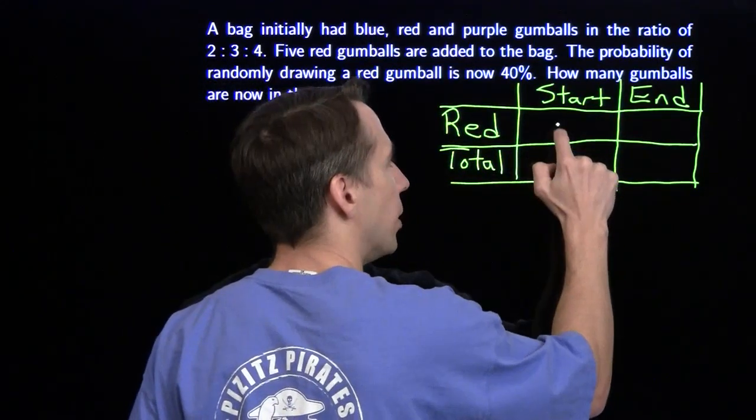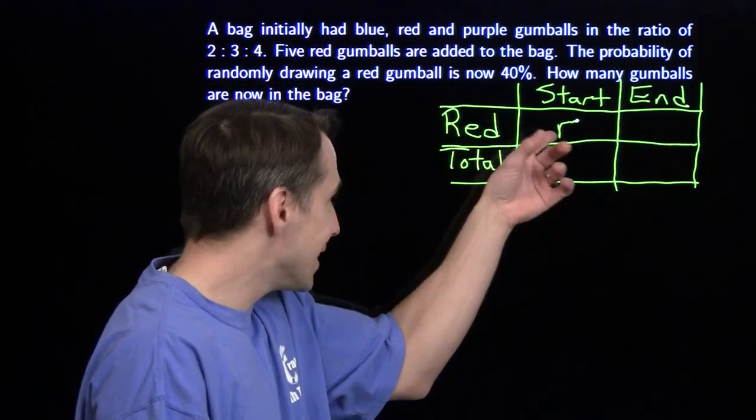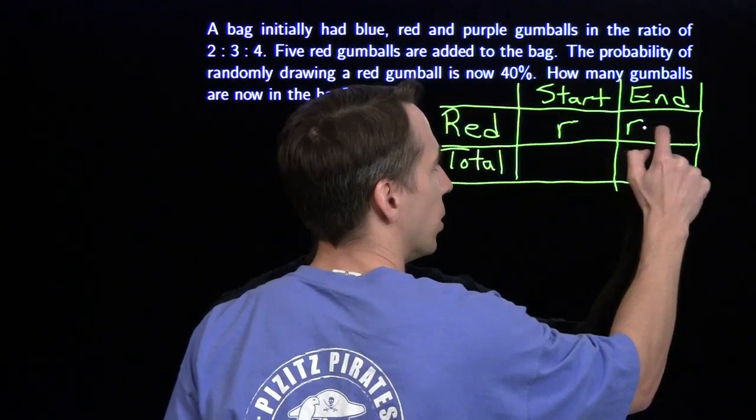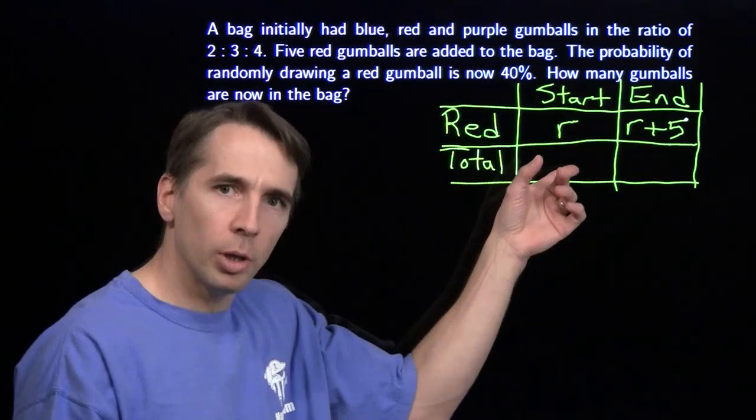I'm going to use a variable for the number of red gumballs at the start. We're going to call that r. I chose that because it's easy to relate this both to the number of red gumballs at the end - all we're doing is throwing in five more red gumballs.